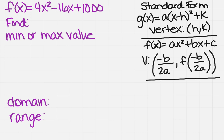When I look at this, I notice that the leading coefficient in front of the x squared is 4. Well, that 4 is greater than 1, so we know it's going to open up. And if it opens up, then we have a minimum value. So we know we're looking for a minimum.